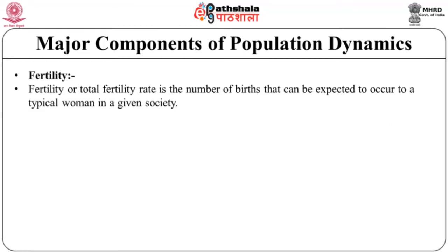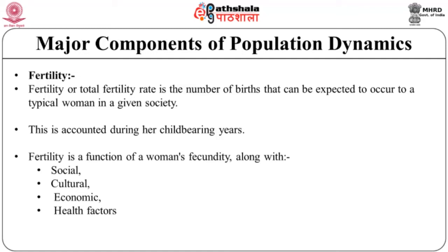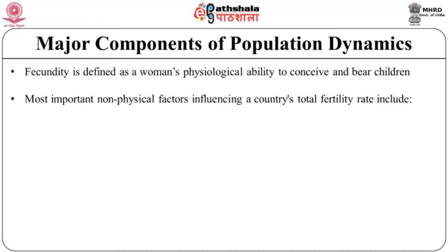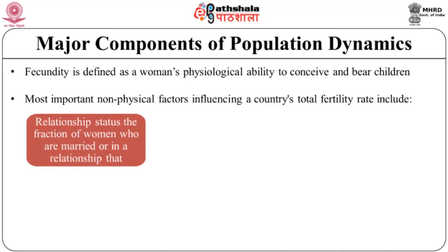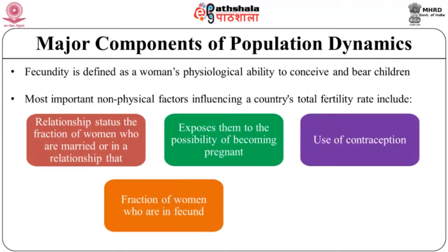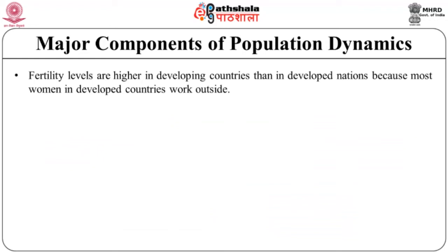Fertility, or total fertility rate, is the number of births expected to occur to a typical woman in a given society during her childbearing years. Fertility is a function of a woman's fecundity — her physiological ability to conceive and bear children — along with social, cultural, economic and health factors influencing reproductive choices. The most important non-physical factors influencing a country's total fertility rate include relationship status, use of contraception, and prevalent abortion rates. Fertility levels are higher in developing countries than in developed nations.